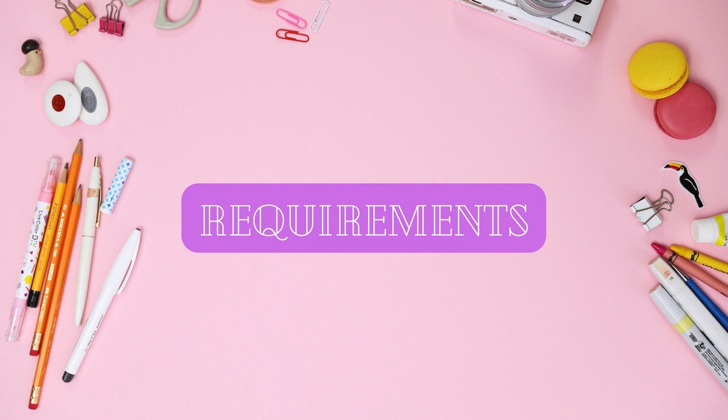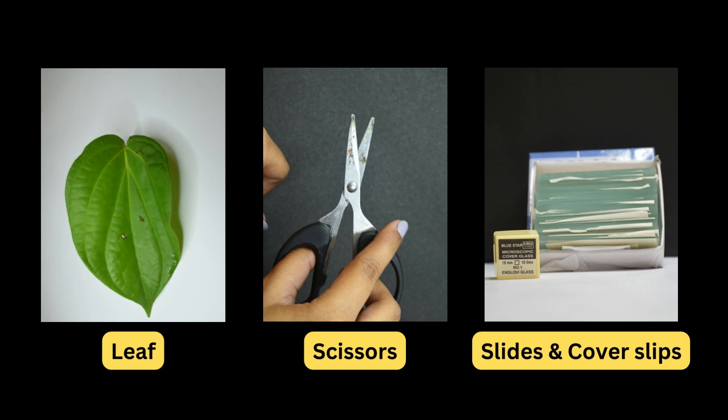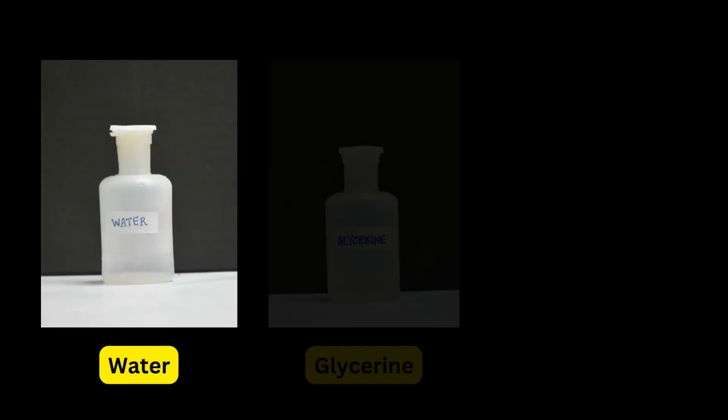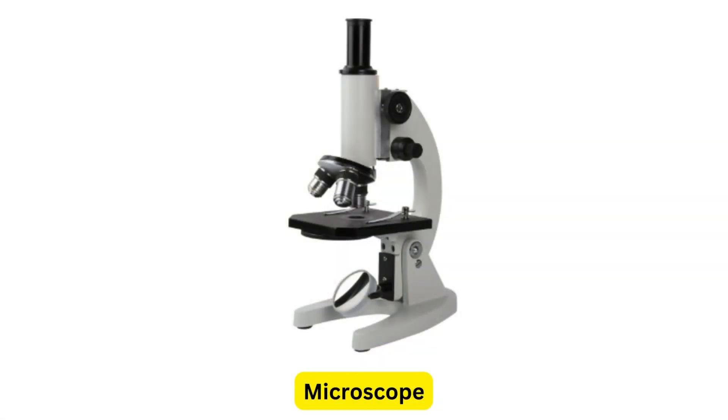For the activity, we will need a leaf, a pair of scissors, glass slides and cover slips, water, glycerin, saffronin, and a microscope.